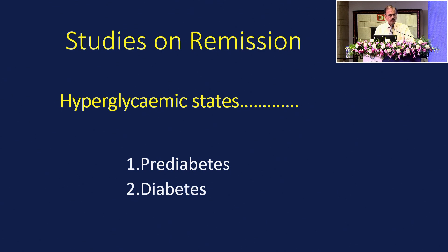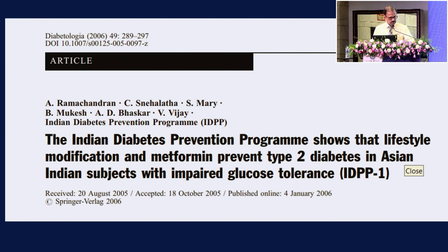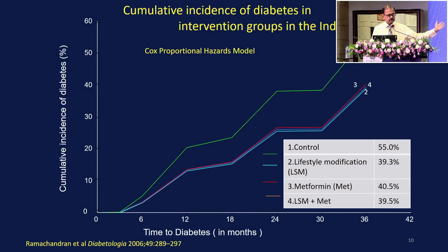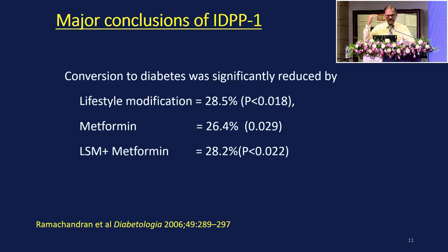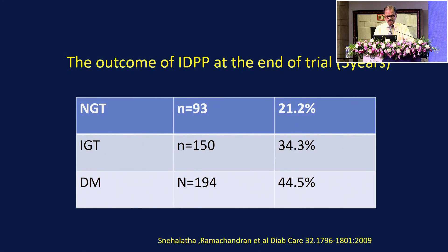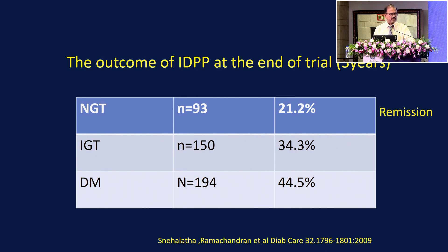In pre-diabetes, you have early abnormalities and you can study the pathophysiological changes involved in reversal. For this I refer to the Indian Diabetes Prevention Programme, published as early as 2006. In the four arms of the study, the cumulative incidence of diabetes was significantly high in the control group, while the intervention group showed almost 39–40% incidence — a relative risk reduction of about 30% at the end of three years. About 21% of those who had IGT remitted to normal, while 44% developed diabetes. At that point in 2006, we called it remission of pre-diabetes.